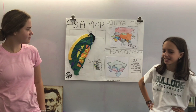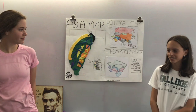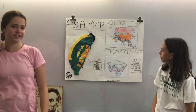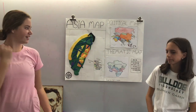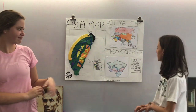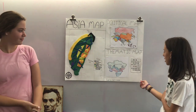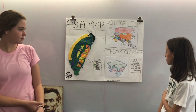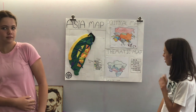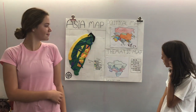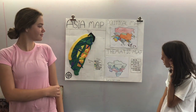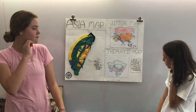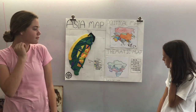We did a map on Asia. This is our political map — each country is a different color. This is our climatic map. Green is 10 million to 20 million, red is 1 million to 10 million, and blue is 30 million to 50 million.